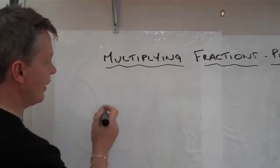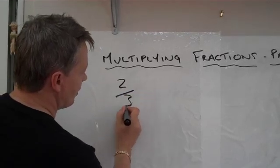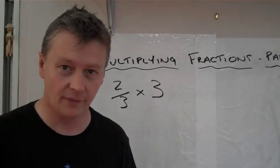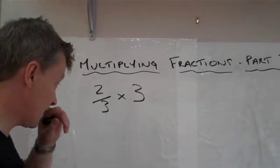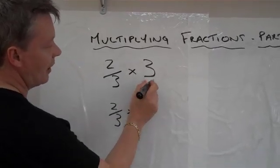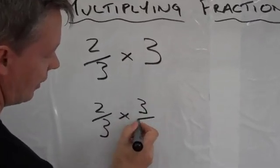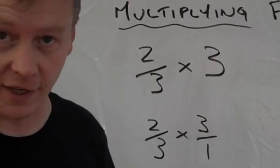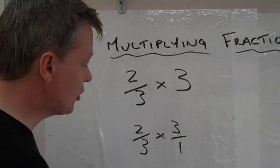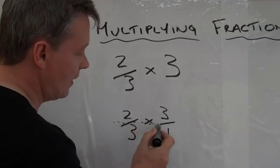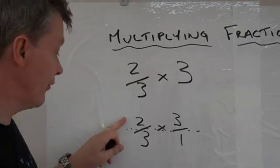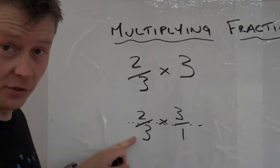The first question is 2 thirds multiplied by 3 whole ones. Like we've done before, we're going to rewrite that as 2 thirds multiplied by 3 over 1 — it just makes things a little bit easier. We can treat the top in exactly the same way as the bottom, so anything that happens above the line we also need to do to the bottom.